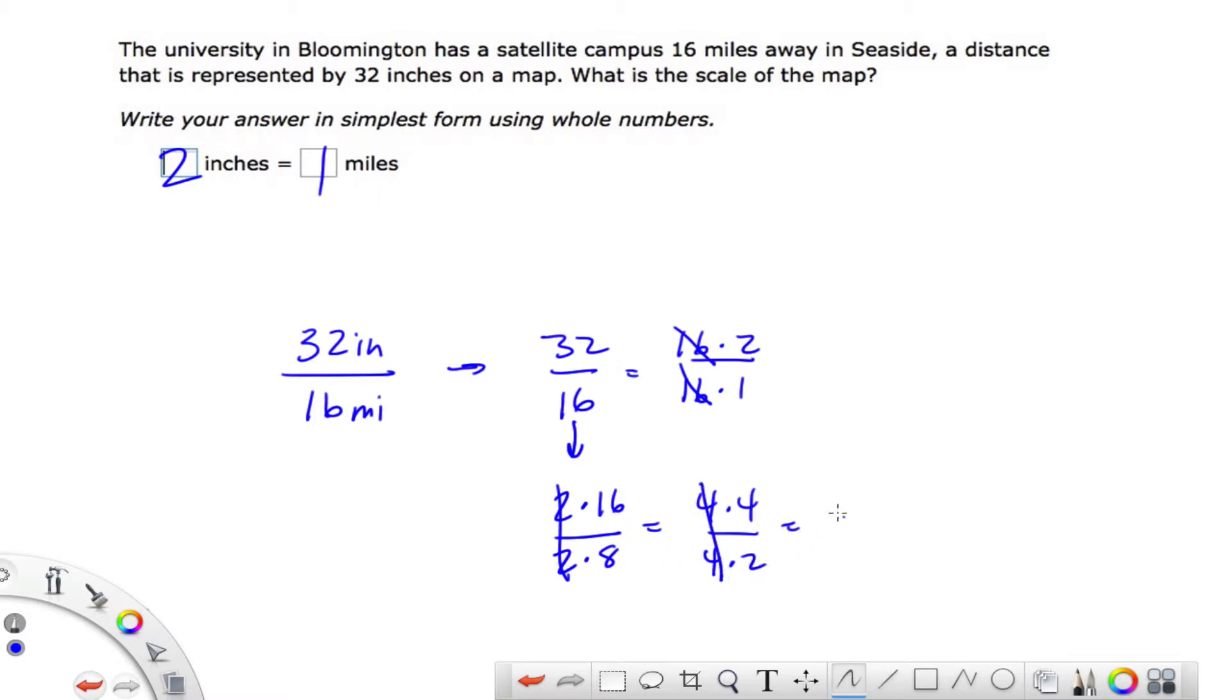And 4 over 2 reduces to 2 over 1. So again, if you can find the greatest common factor, your work is done. But you might have to do it step by step if you don't happen to see that greatest common factor. So we set up the ratio and reduced, because now we're trying to find both of those numbers.